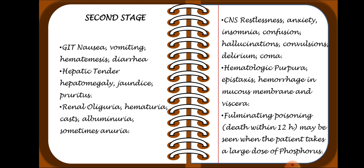In the second stage, GIT symptoms include nausea, vomiting, hematemesis, and diarrhea. In the hepatic region: tenderness, hepatomegaly, and jaundice. In the renal system: oliguria, hematuria, casts, albuminuria, and sometimes anuria. In the CNS: restlessness, anxiety, insomnia, headache, confusion, hallucination, convulsion, delirium, and coma. Hematologically: purpura, epistaxis, and hemorrhage in the mucous membranes and viscera.